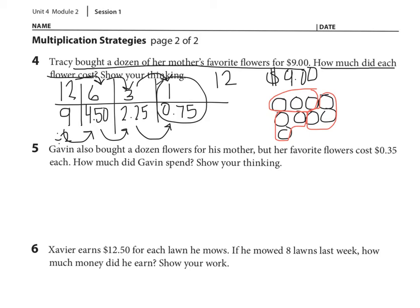Number 5. Gavin also bought a dozen flowers for his mother, but her favorite flowers cost $0.35 each. How much did Gavin spend? Show your thinking. So we know Gavin also bought a dozen flowers. How many is a dozen? 12. And they cost $0.35 each. How much did Gavin spend? So do we know the total that Gavin spent? No. But do we know how much each one costs? Yes. How much did each one cost? $0.35. And now we want to know the cost of 12.